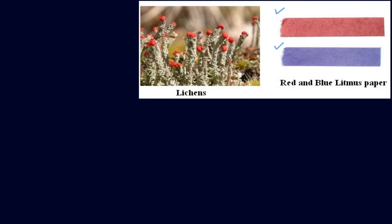Lichen is a naturally occurring indicator, and from this lichen you make litmus papers. The most commonly used natural indicator is litmus — it is extracted from lichen.